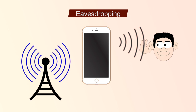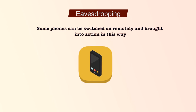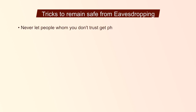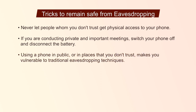Another concern is eavesdropping. Your phone can be set to record and transmit any sounds within the range of its microphone without your knowledge. Some phones can be switched on remotely and brought into action in this way even when they appear to be switched off. Some tricks to remain safe from eavesdropping: never let people whom you don't trust get physical access to your phone, as this is a common way of installing spying software. If you are conducting private and important meetings, switch your phone off and disconnect the battery, or don't carry the phone with you if you can leave it somewhere absolutely safe. Make sure that any person with whom you communicate also employs these safeguards. Don't forget that using a phone in public or in places you don't trust makes you vulnerable to traditional eavesdropping techniques or to having your phone stolen.